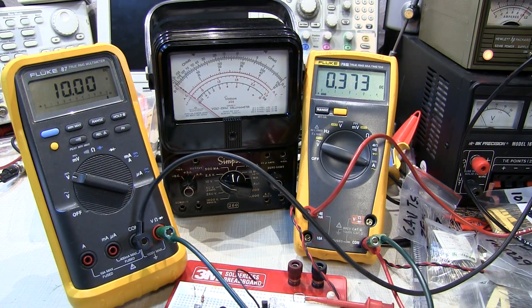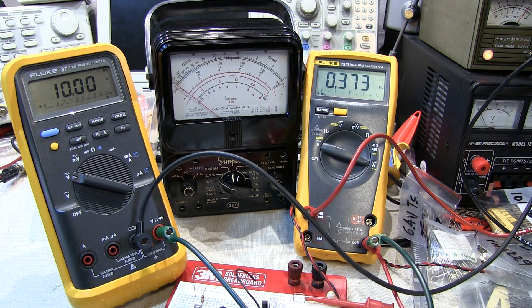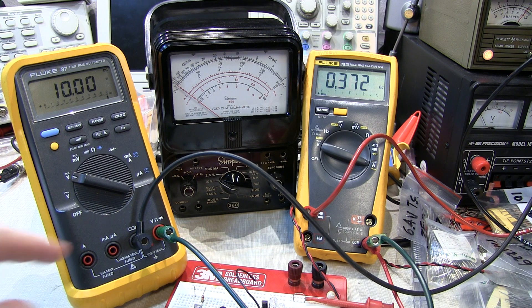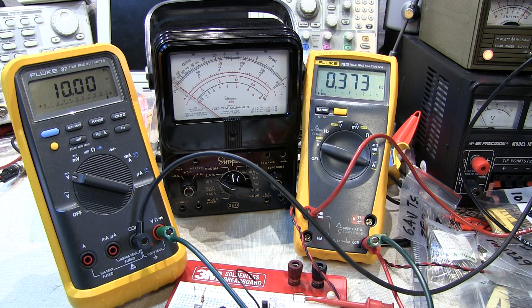So the lesson here is always take into consideration the loading that your test equipment is going to place on the circuits that you're testing. Even a 10 megaohm input impedance of a modern DMM can slightly affect circuits, particularly when you're dealing with high impedance circuits like a current source here.